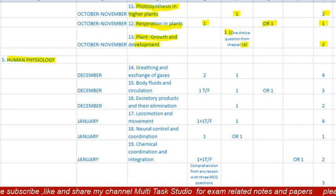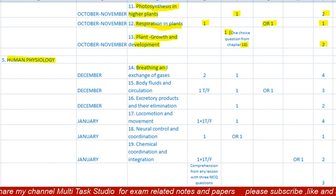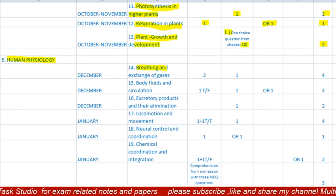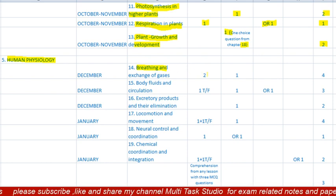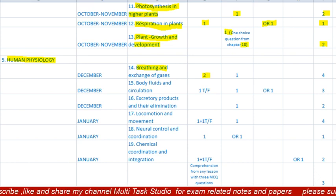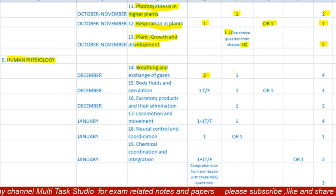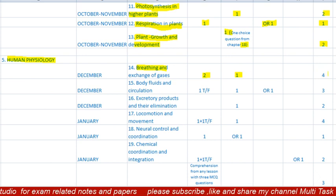Unit 5 is 'Human Physiology.' Lesson 14 is 'Breathing and Exchange of Gases,' to be completed in December. There will be two one-mark questions — one MCQ and one fill in the blank — and one question of two marks. Total paper will be four marks.